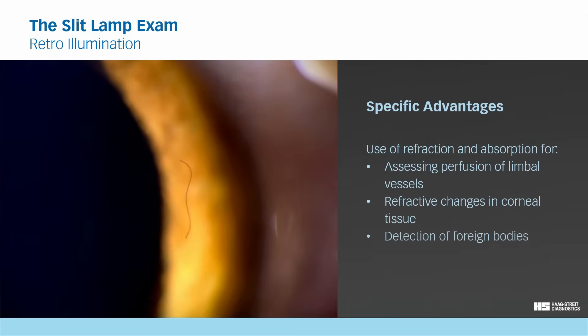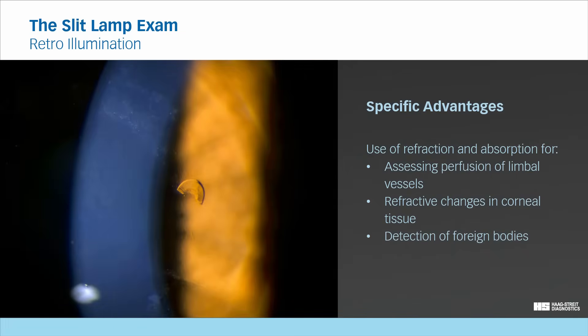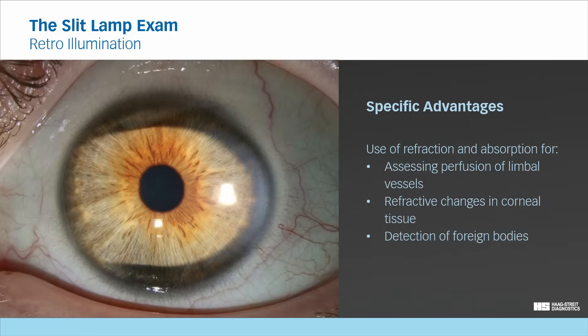When assessing a non-transparent foreign body embedded within the transparent corneal tissue, the foreign body will appear dark as it absorbs the light rather than transmitting it. A transparent foreign body, however, may also refract but not fully absorb the reflected light. The absorption-transmission phenomenon allows you to detect transillumination phenomena of the iris using the red reflex from the retina.